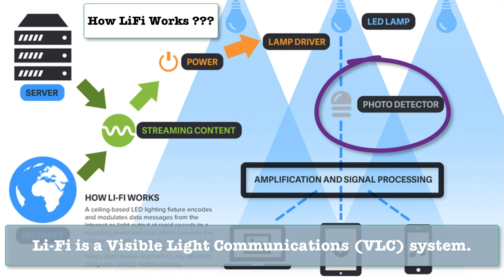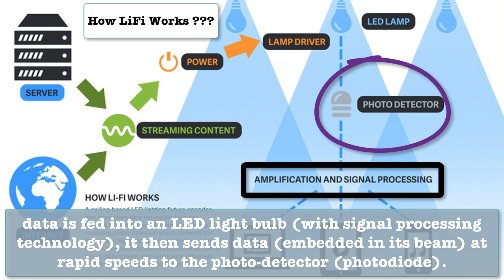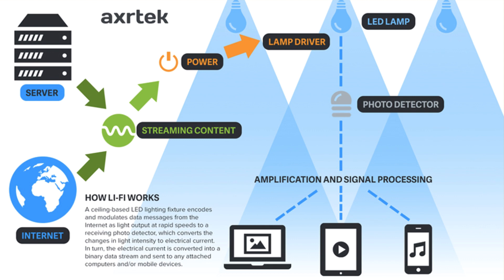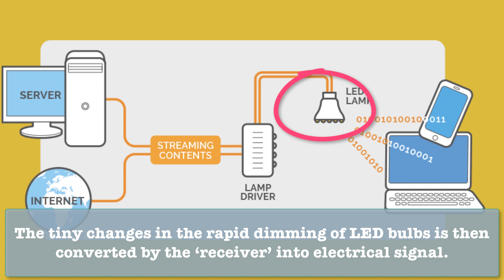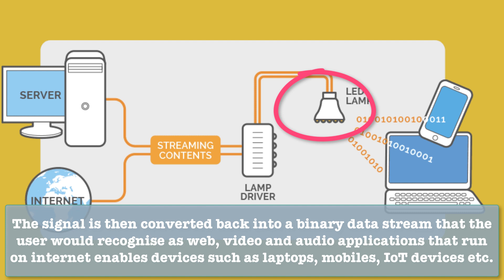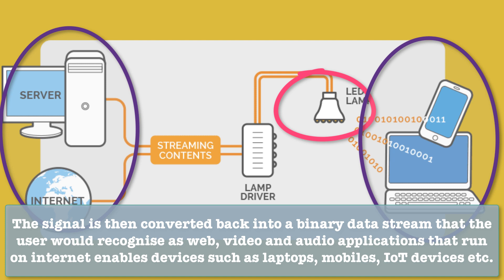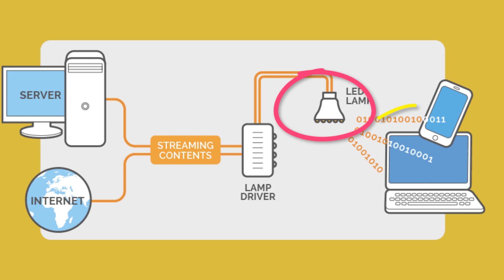Unlike Wi-Fi which uses radio waves, Li-Fi runs on visible light. Data is fed into an LED light bulb with signal processing technology. It then sends data embedded in its beam at rapid speeds to the photo detector — a photo diode. The tiny changes in the rapid dimming of the light bulb are converted by the receiver into an electrical signal, which is then converted back into a binary data stream that the user recognizes as web, video, and audio applications running on internet-enabled devices such as laptops, mobiles, and IoT devices.